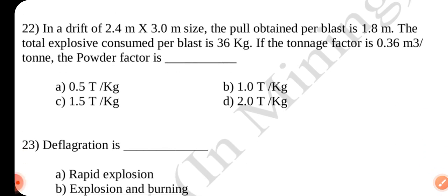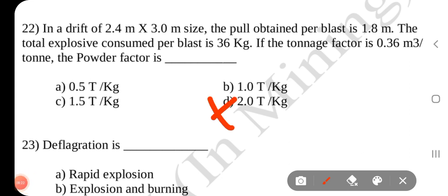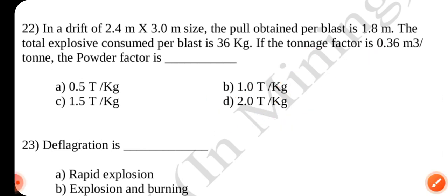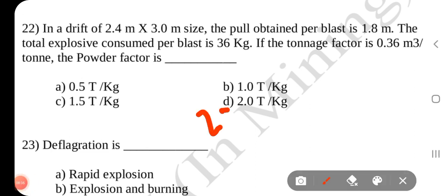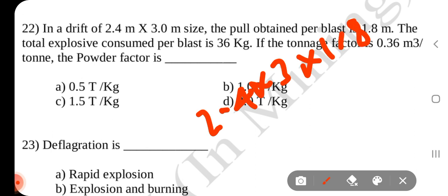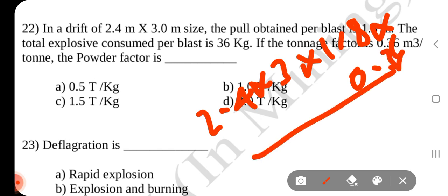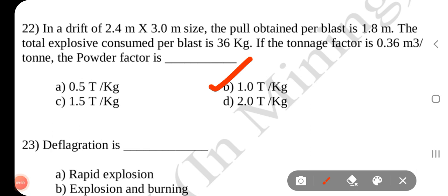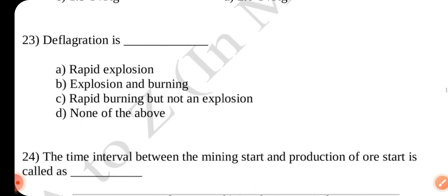Question number 22: In a drift of 2.4 m × 3 m size, the pull obtained per blast is 1.8 m. The total explosive consumed per blast is 36 kg and the tonnage factor is 0.36 m³/ton. Using the formula — total tonnage divided by total explosive — total tonnage = 2.4 × 3 × 1.8 ÷ 0.36 = 36 tonnes. Powder factor = 36 ÷ 36 = 1 t/kg. Answer is B — 1 t/kg.